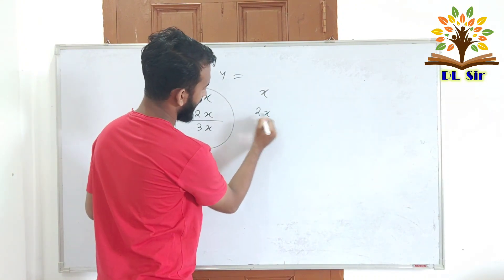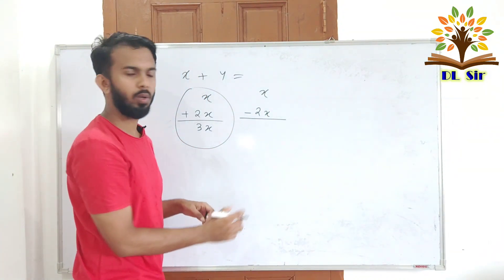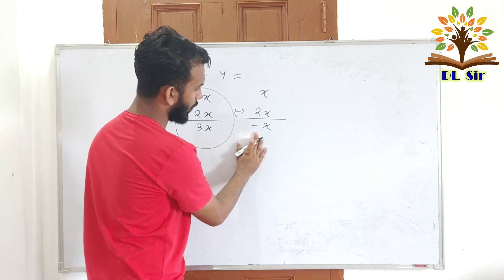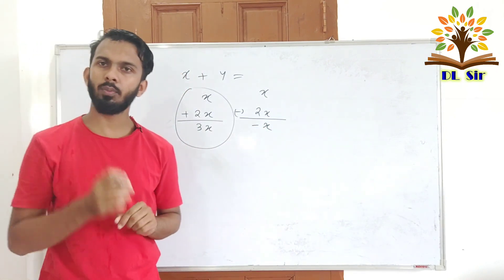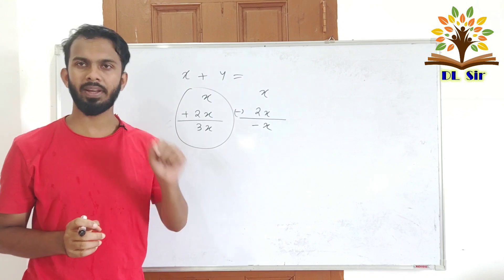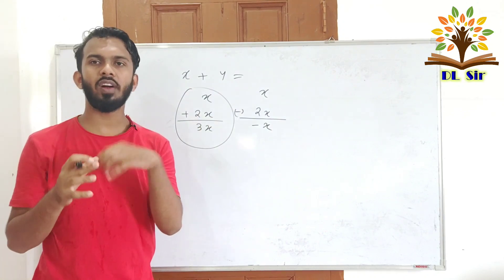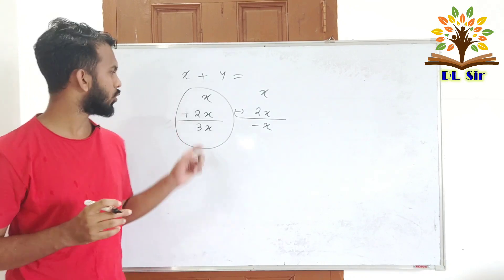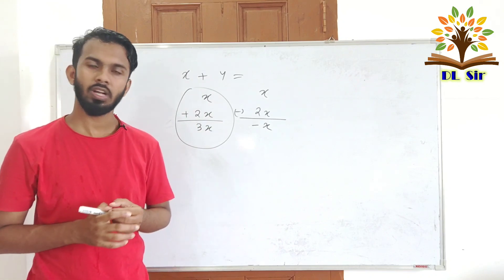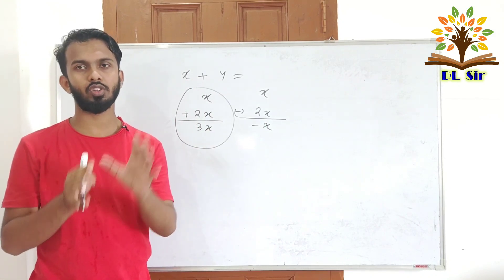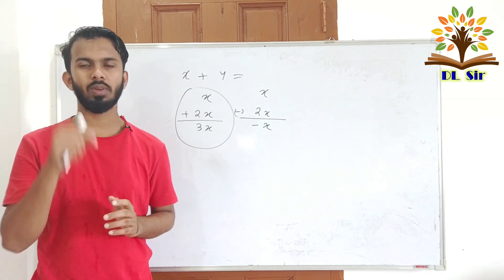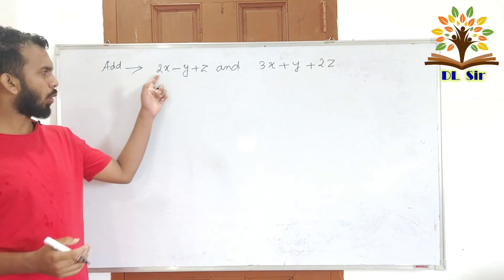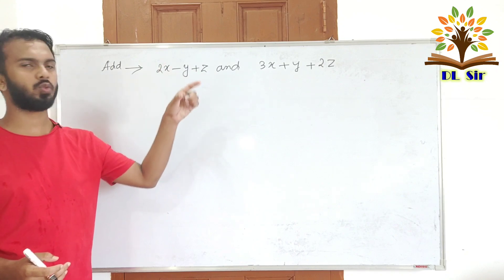If we write x twice and then subtract x, so x minus x, then we write the result as the same variable. If we have x plus x plus x, that gives us 3x. We work with the same variables and combine like terms.